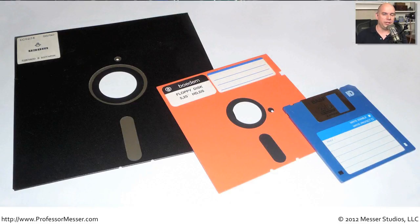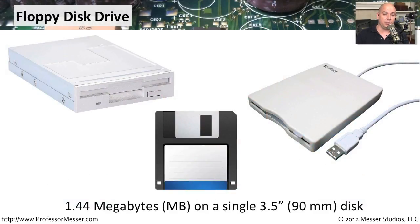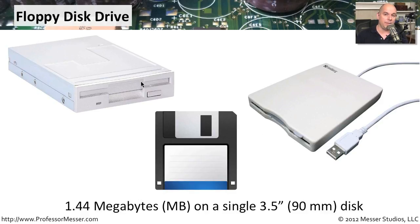We don't see floppy drives very much any longer, but back in the day we had large 8-inch floppy disks, 5¼-inch, and the ones most of us are accustomed to are the 3½-inch floppy drives. Floppy drives are very difficult to find on newer computers, but you can purchase a USB-connected floppy drive if you still need to read information off this media. The 3½-inch disks store 1.44 megabytes of information, so if you have older media around you can still read it with a built-in or USB-connected floppy disk drive.